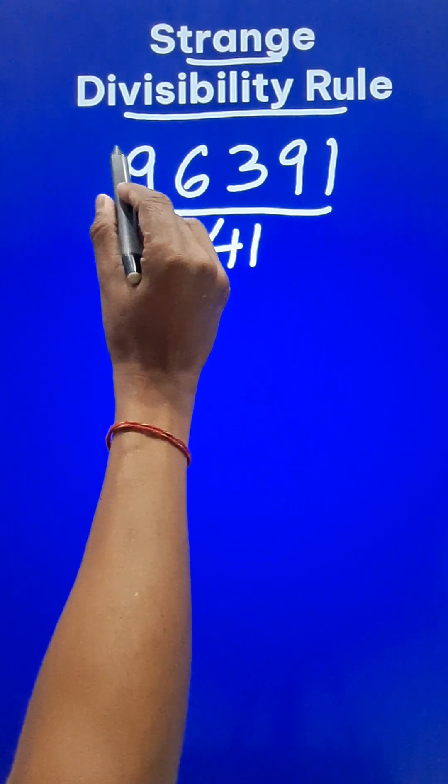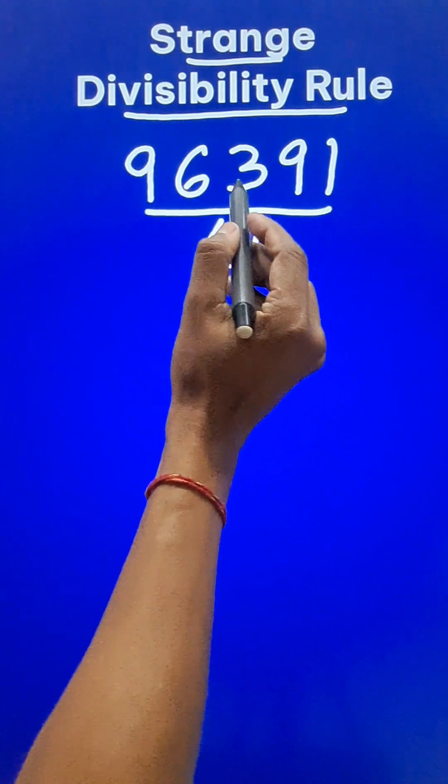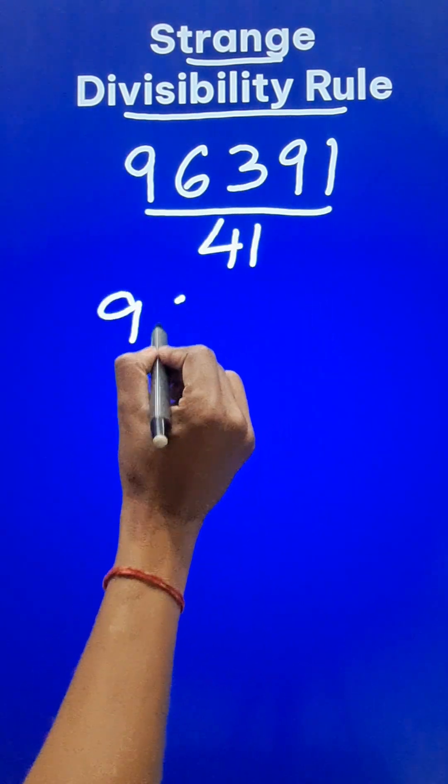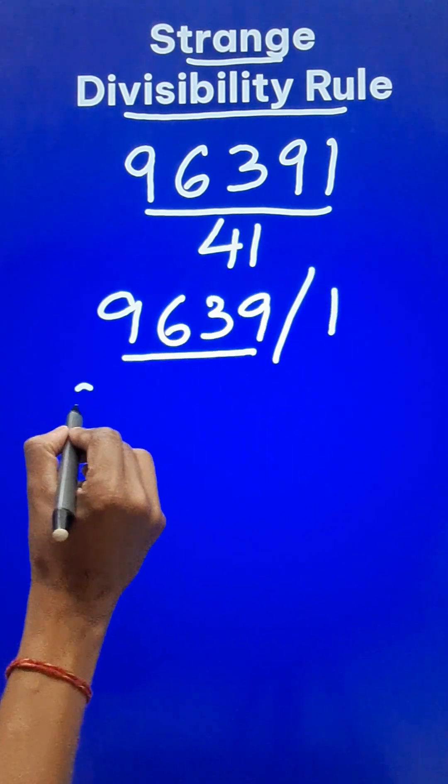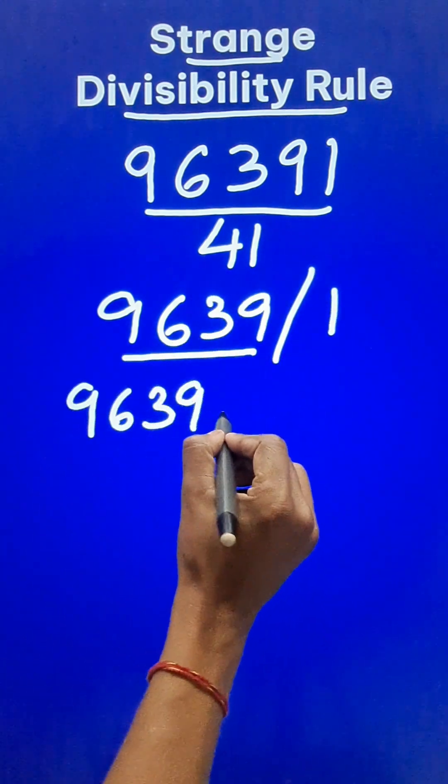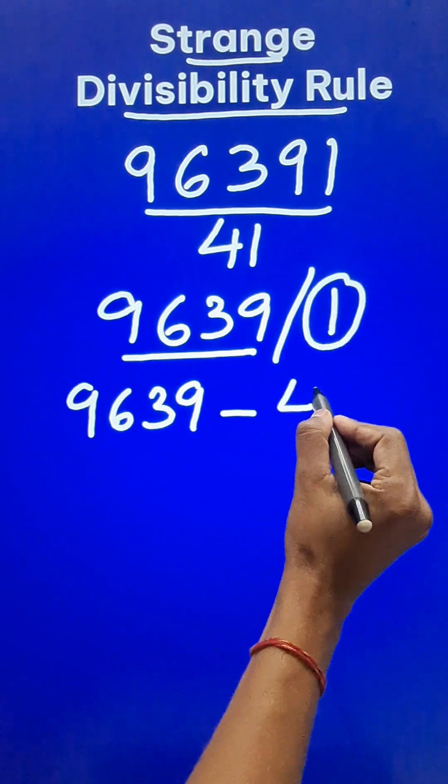So to test whether a given number is divisible by 41 or not, we separate out the last digit 1 and then from the remaining number 9639 we subtract 4 times this number. So 4 times 1 is 4.